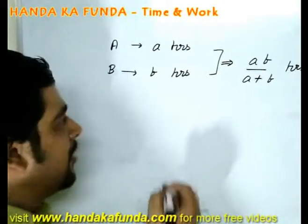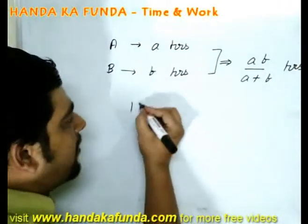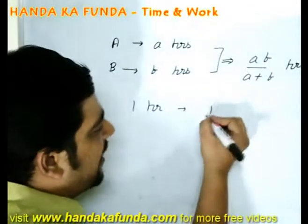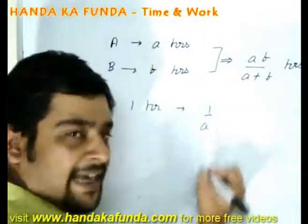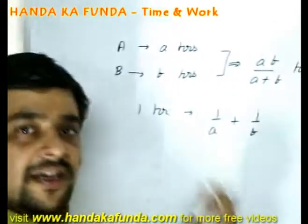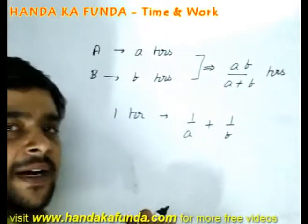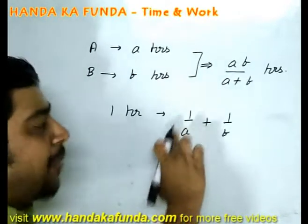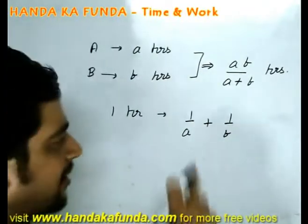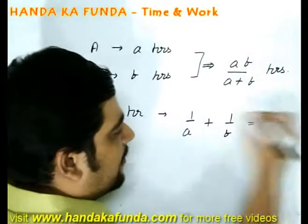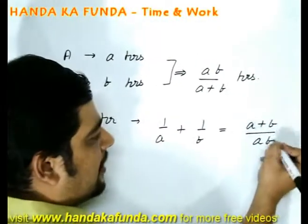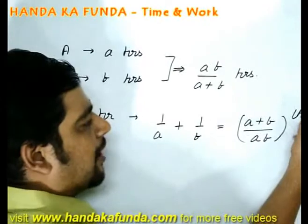Let us see how. What is the amount of work that A does in 1 hour? In 1 hour, A will finish 1/A of the work and B will finish 1/B of the work. If both of them are working together, then they will finish 1/A plus 1/B of the work, which equals (A+B)/AB of the work.